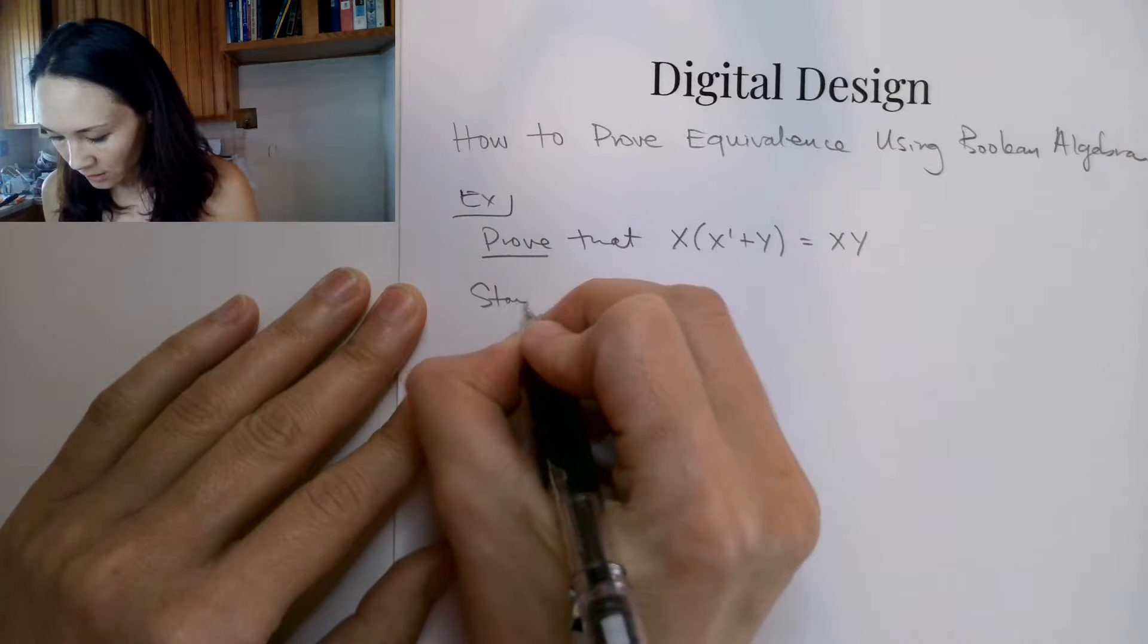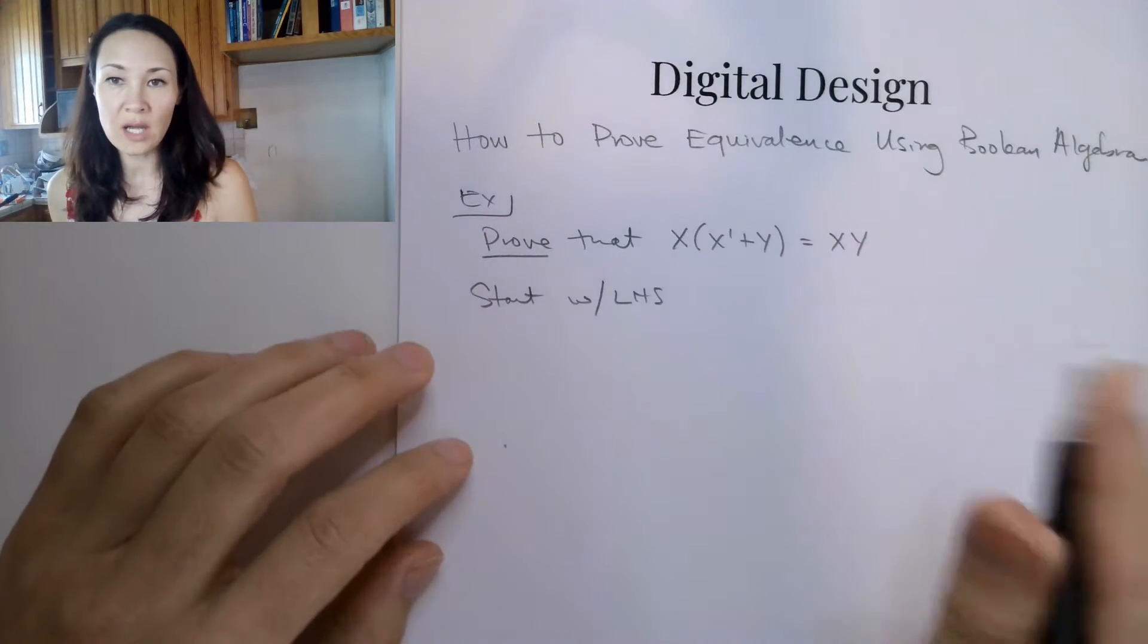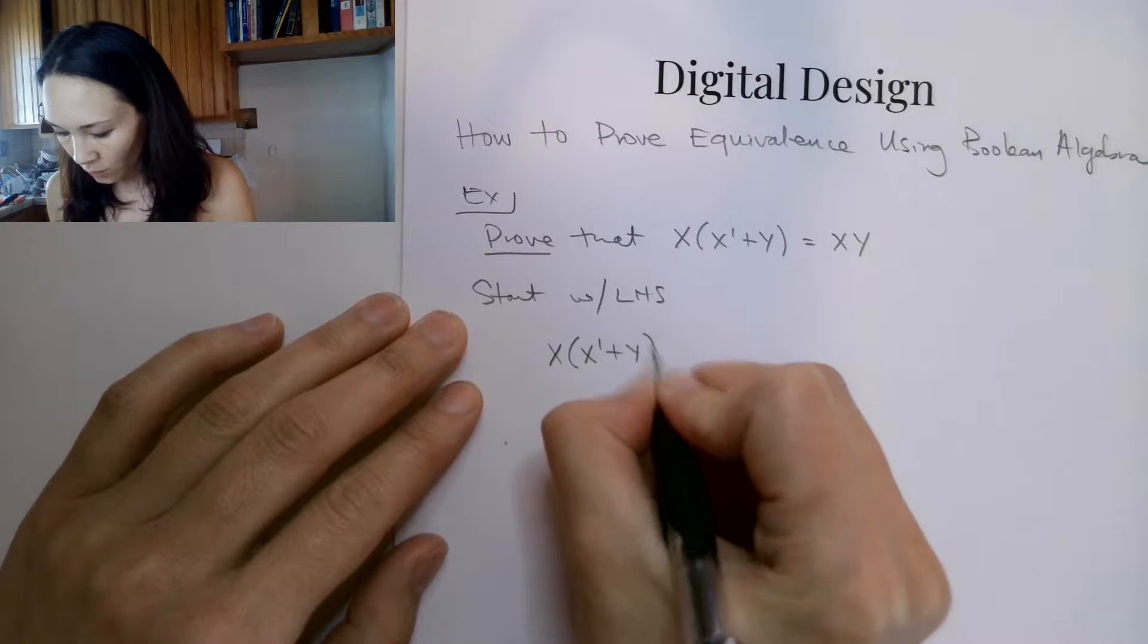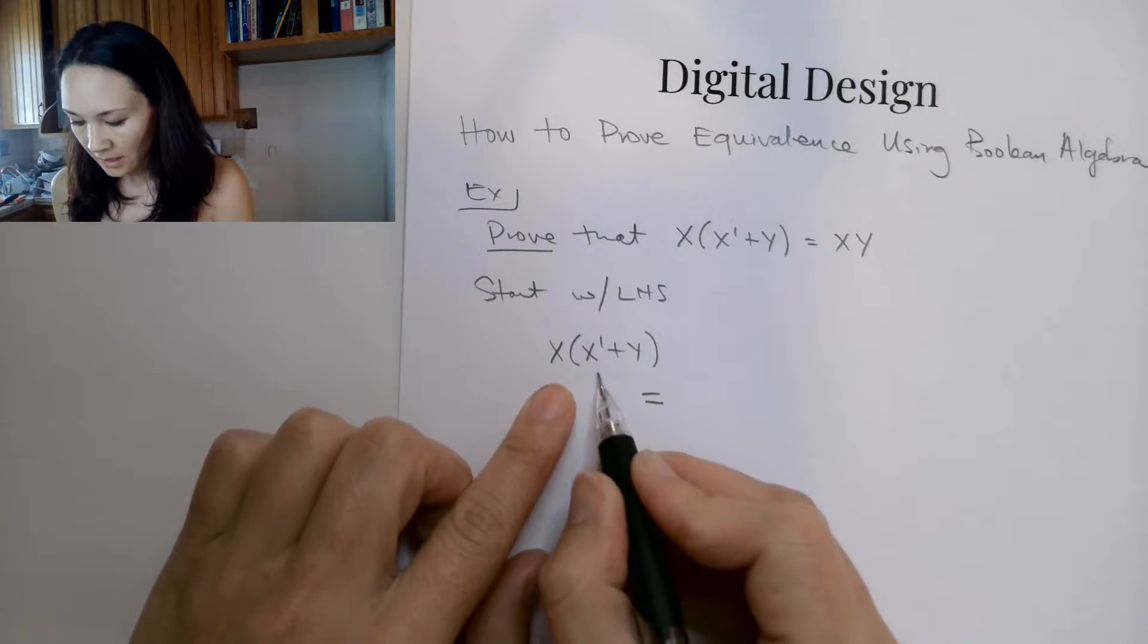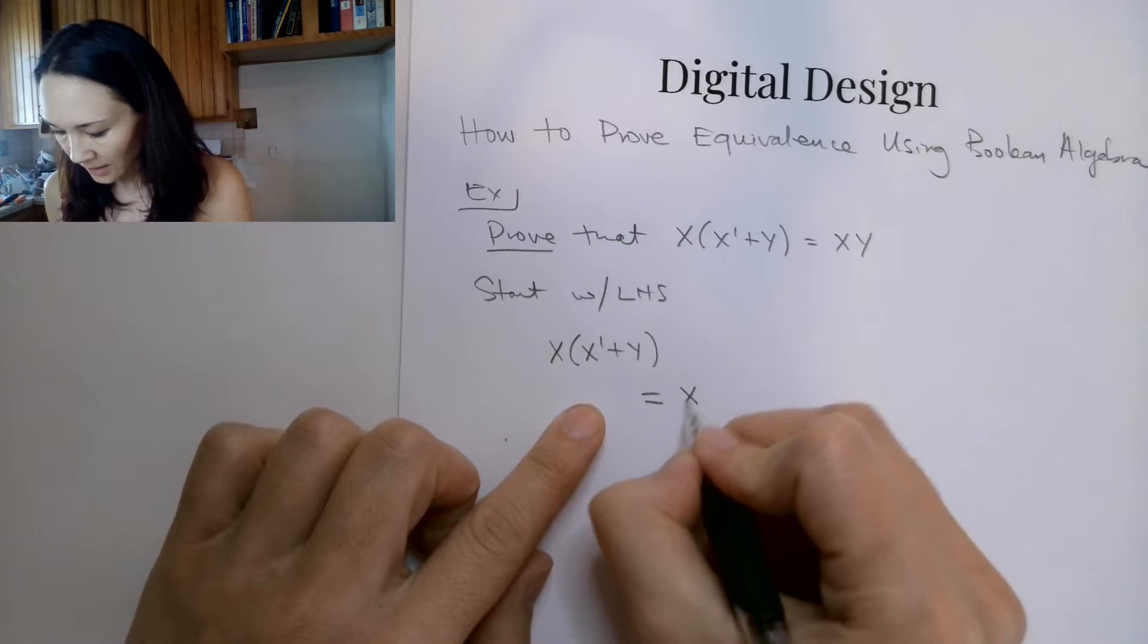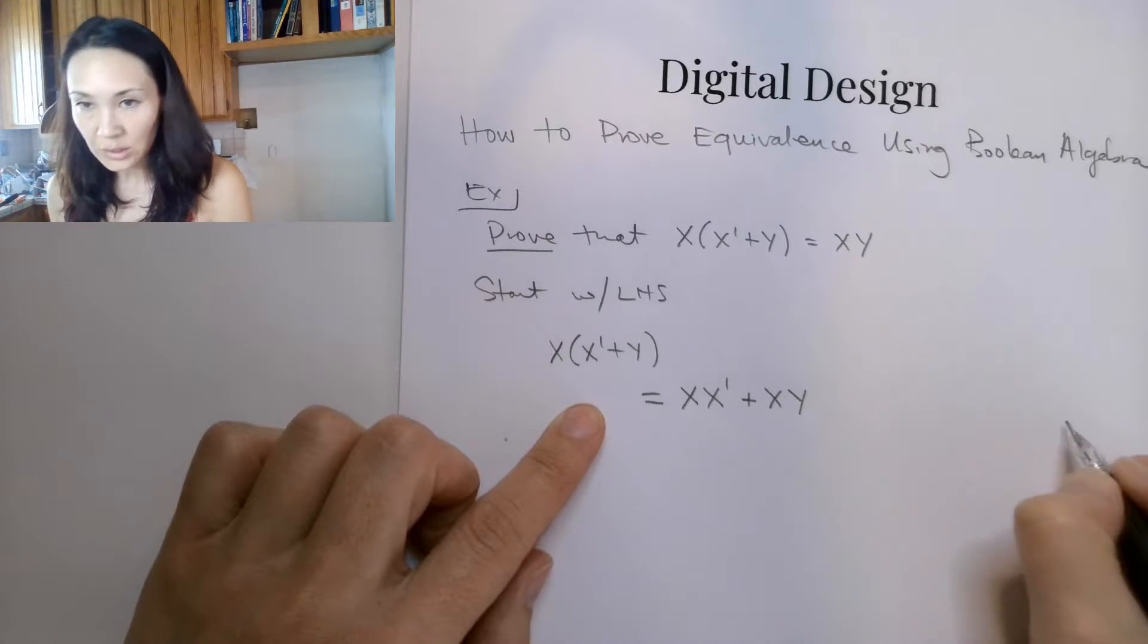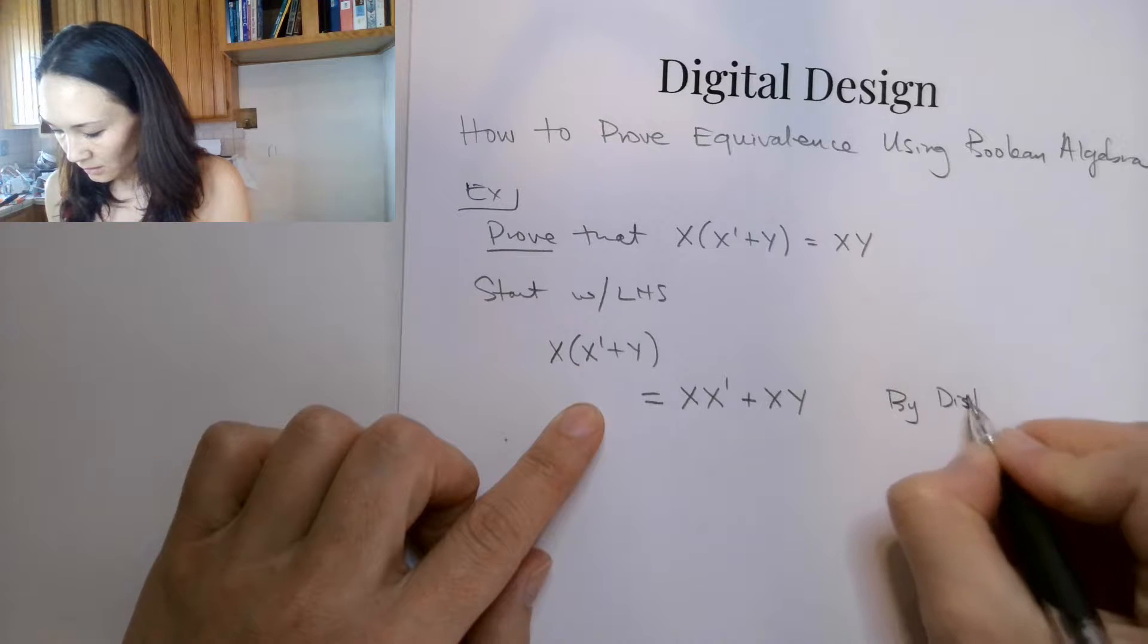So we're going to start with the left hand side. I'm not going to even touch the right hand side of this equation. The left hand side is x and x naught or y. If I distribute this x to both the terms, this gives me x ended with x naught or xy. And I can put a justification here: by distribution.